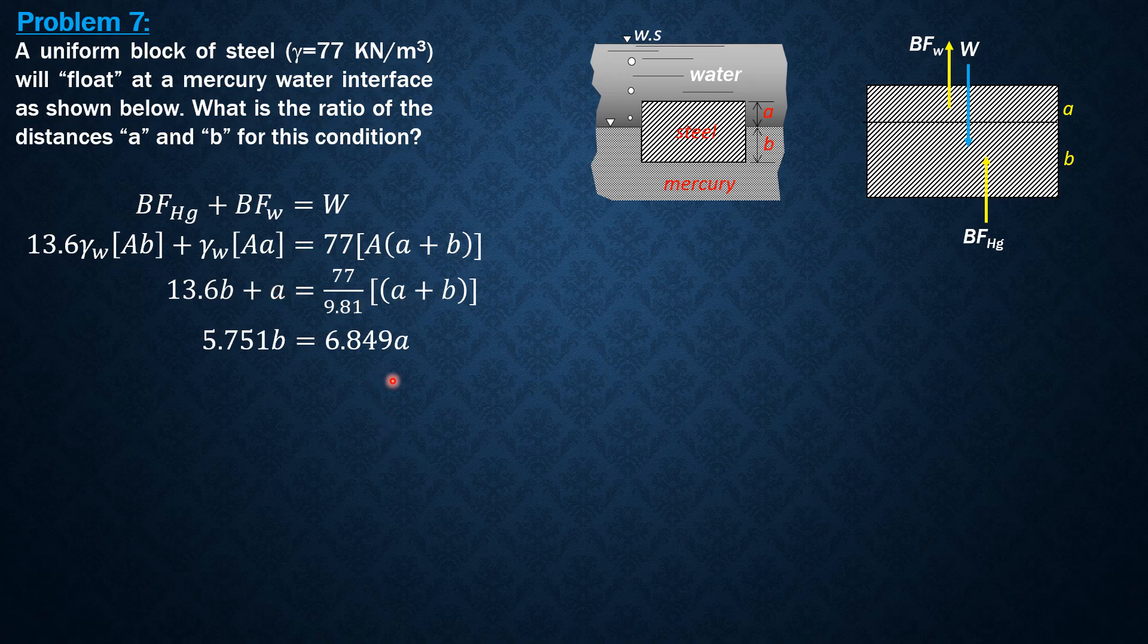Forming the ratio a over b: a over b is 5.751 divided by 6.849, which equals 0.840. That's it for this problem.